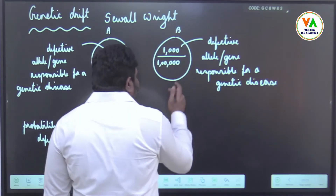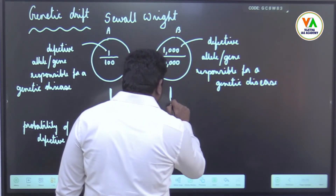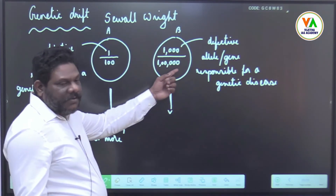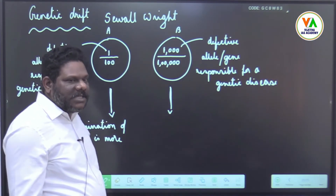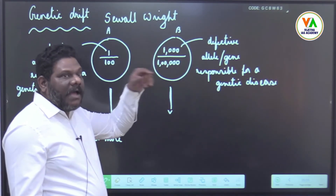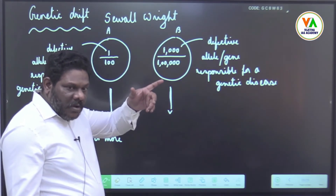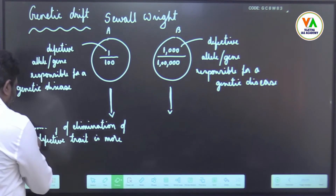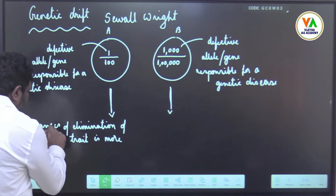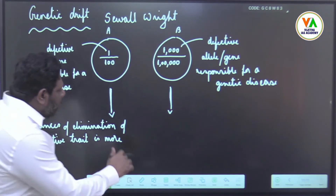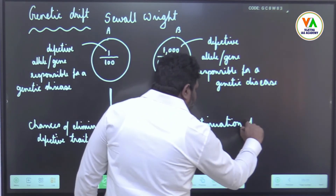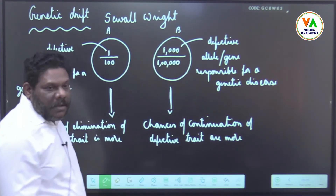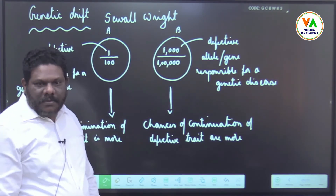The ratio is the same in both cases — 1 in 100. But the population size is large in the second case, and the number of people having defective alleles is also more. So in the smaller population, chances of elimination are more. In the larger population, chances of continuation of the defective trait are more — after some time, many people may start suffering.